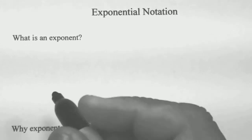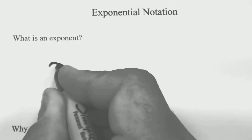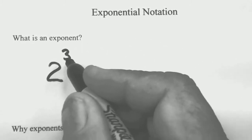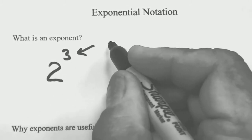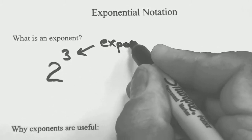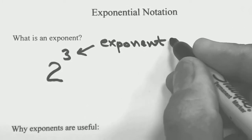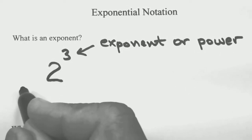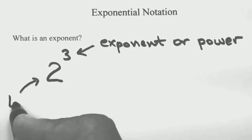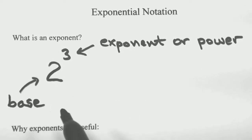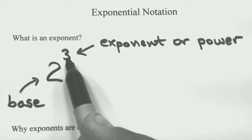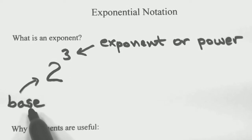First off, we want to remember what an exponent is. Let's give you an example: I can write 2 to the third power. The exponent is the little number up on top — folks call this either the exponent or the power. The main number down below is known as the base. So we would say this is 2 raised to the third power — the power or the exponent is 3, and the base is 2.